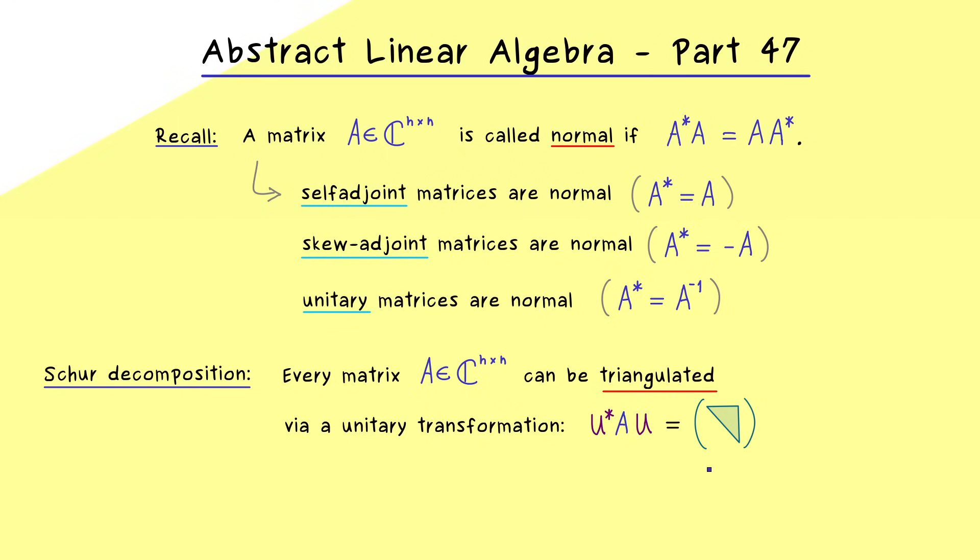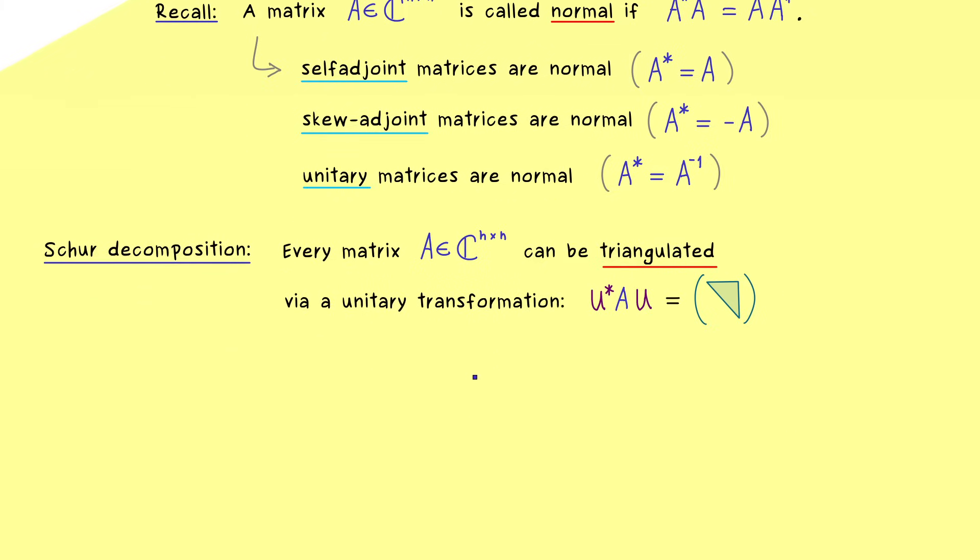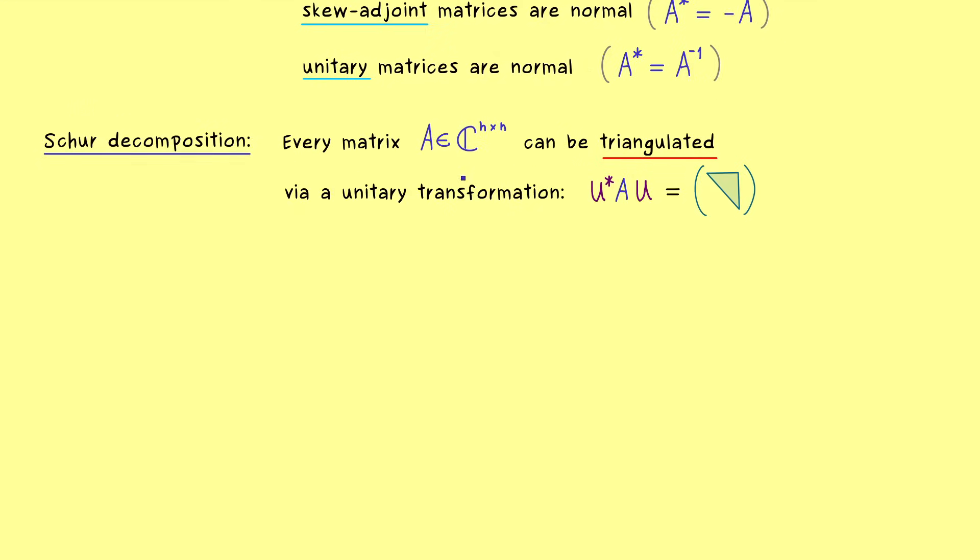So this is already a nice result, but it would be even better if this upper triangular matrix was a diagonal matrix. And in fact we have a special name for that. In this case we would call the matrix A unitarily diagonalizable. So let's put this into a definition for square matrices.